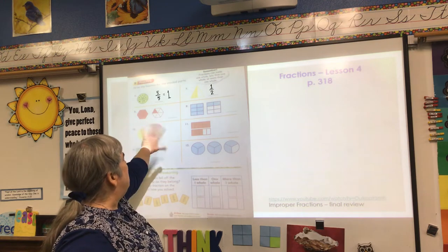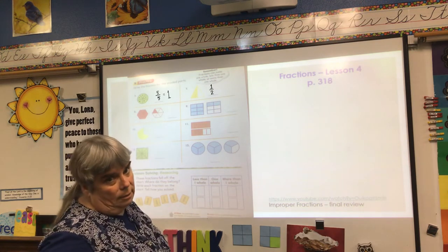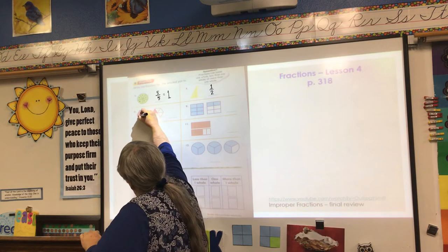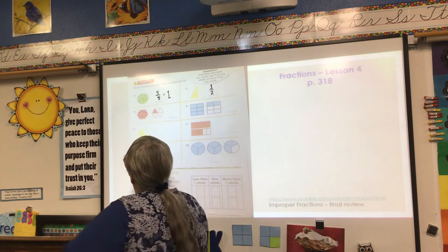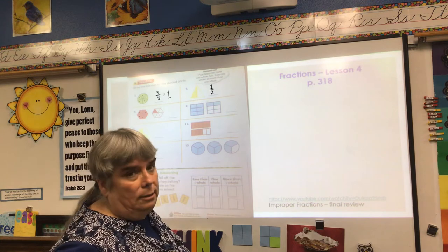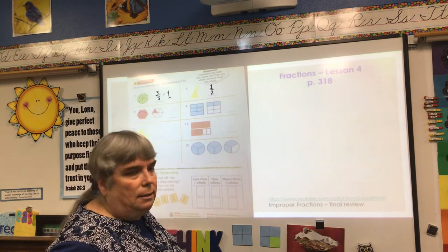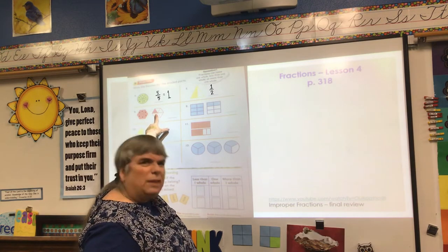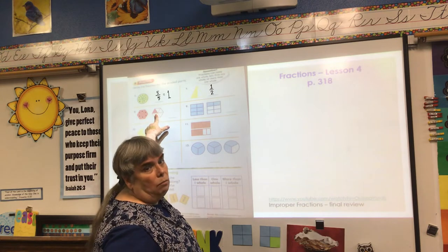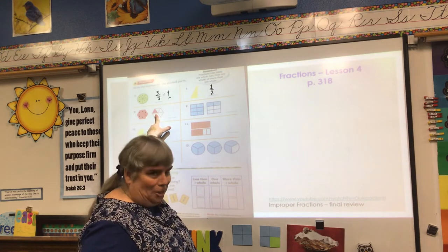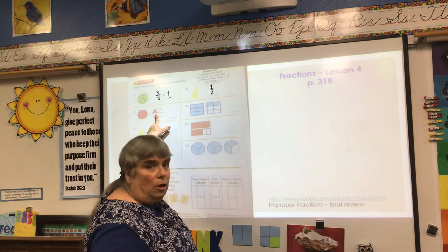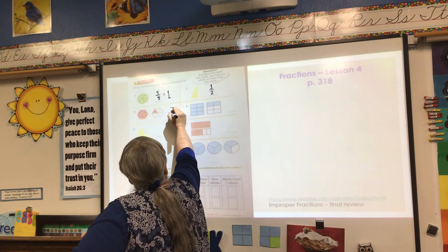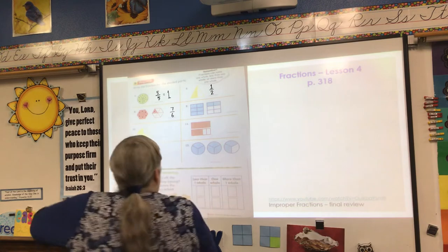It looks like we have two shapes here — they happen to be hexagons because they're six-sided. Let's count the first one: two, three, four, five, six. Not only does it have six sides, but it's split into six pieces. So I have six pieces there, but I have another one right here, so that's going to be more than one whole — an improper fraction where the number on the top is larger than the number on the bottom. I'm going to call that seven-sixths.